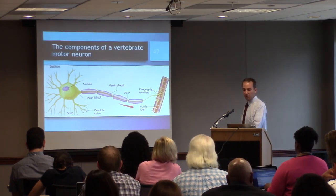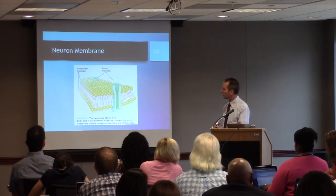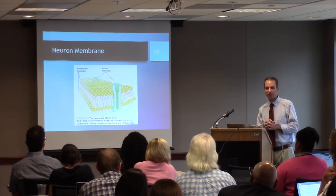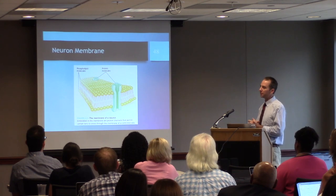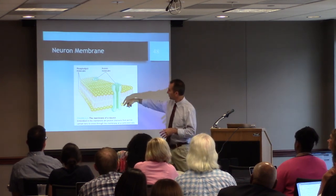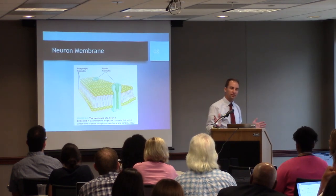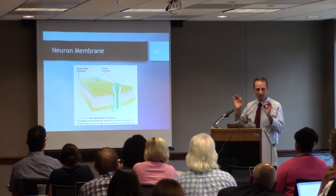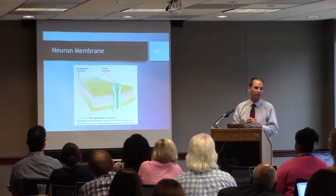If you zoom in on the membrane of the cell, you find this phospholipid bilayer — a fluid, flexible membrane. But there are proteins embedded within this membrane. Some of them act as channels, or pores, that allow only certain ions to pass through and only at certain times. It is these proteins that are crucial for the functioning of neurons, because normally the membrane is impermeable to ions — they're not allowed to cross.